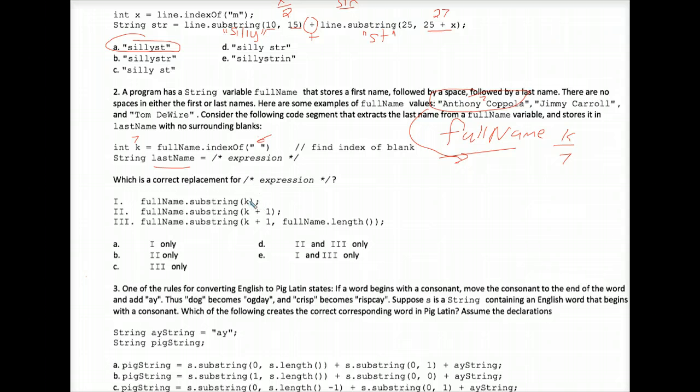And now we have to decide what is last name. Which of these three Roman numeral code segments could plug in for expression here and make this work? If K were simply put in substring there, that means in the case of Anthony Coppola, we are pulling out the substring that starts at position seven. Well, position seven is the blank space. So that would pull out space Coppola because when you have substring with just one parameter, it starts at that point and it extracts everything from there on in the string. The answer here would come out to space Coppola, which is not his last name. So Roman numeral one is out, and that rules out A and E.